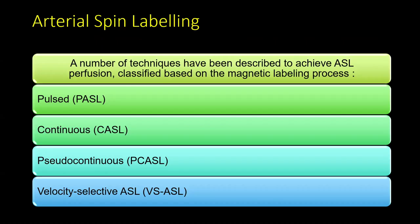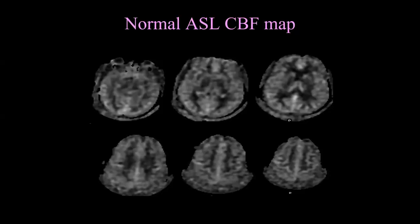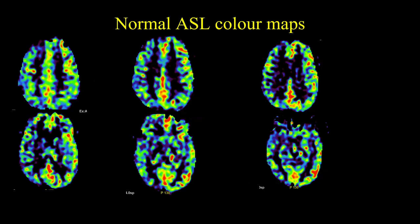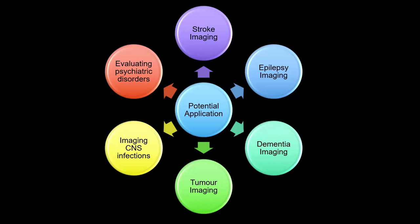There are various ways in which ASL can be performed: pulsed ASL, continuous ASL, the currently used PC-ASL or pseudo-continuous ASL, and velocity selective ASL. On a grayscale map of a normal person, after post-processing on workstations, we acquire a normal ASL color map where, in a rainbow spectrum, hyperperfused areas appear red and hypoperfused areas appear towards the blue or violet end of the spectrum. This non-contrast perfusion technique adds only about four additional minutes to an MRI sequence.